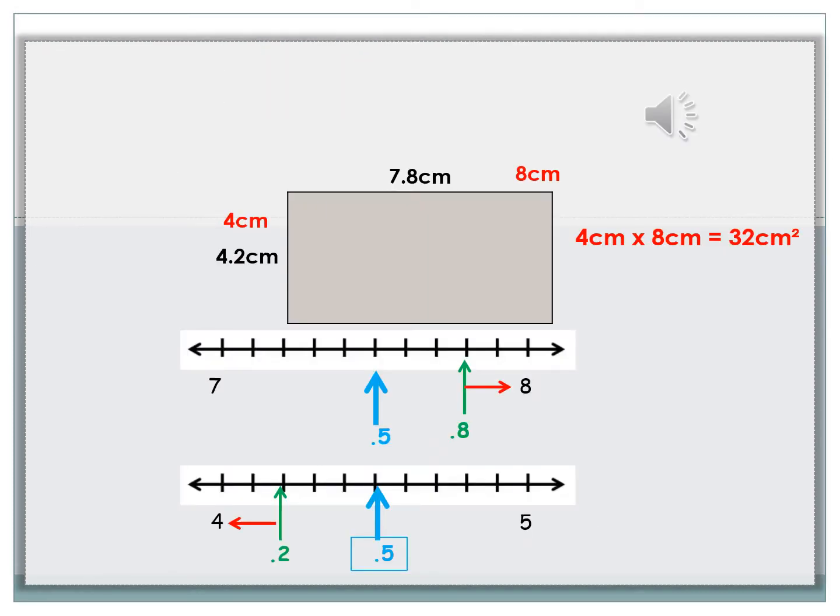Sometimes the question will ask you to estimate the area of a shape. In this case, it is asking you to estimate the area of the rectangle. The dimensions we've been given is 7.8 and 4.2. So what we need to do is we need to round both those numbers to the nearest whole number.